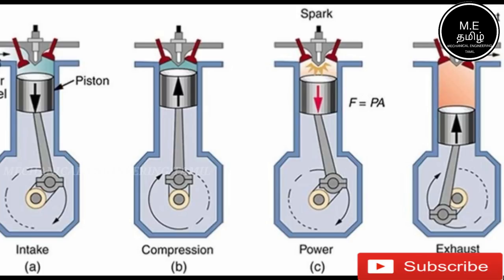The 4-stroke engine has four strokes: intake, compression, combustion, and exhaust. The crankshaft rotates and the pistons come up to compress the air-fuel mixture. Once you compress the air-fuel mixture, watch the spark plug — the pistons come up and then the combustion stroke occurs, and after that the exhaust comes out.